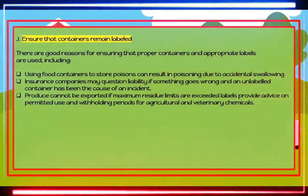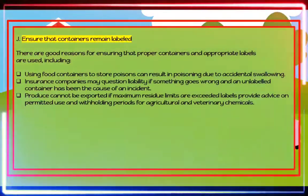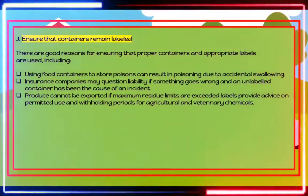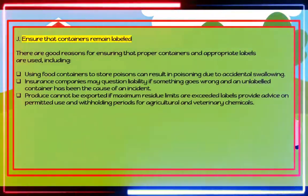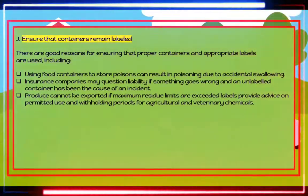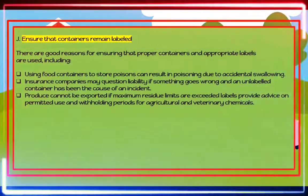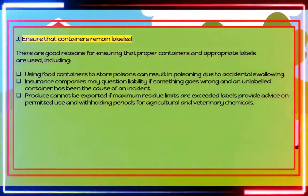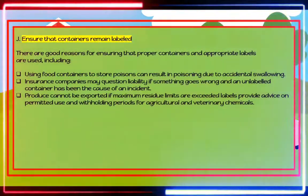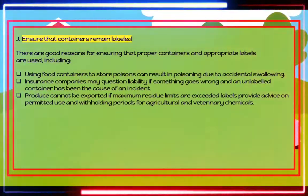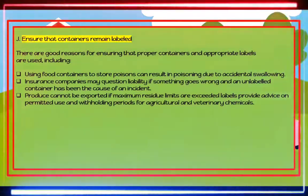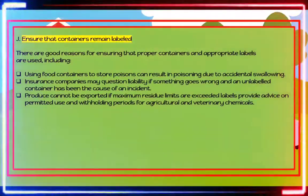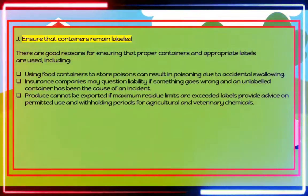Farmers must ensure that original labels remain on containers of substances. If a substance is poured into a second container such as a spray tank, that container must be labeled with the product name and appropriate risk and safety phrases. Labeling is not necessary if a substance is used immediately and its container is thoroughly cleaned. Proper containers and labels are important because: using food containers to store poisons can result in accidental poisoning; insurance companies may question liability if unlabeled containers cause an incident; and produce can be rejected for export if maximum residue limits are exceeded.